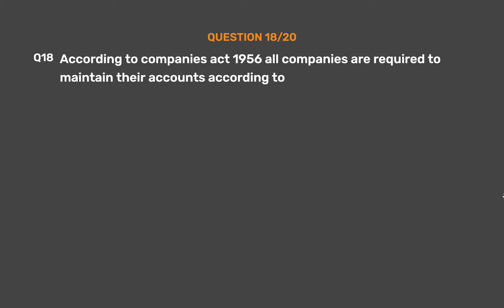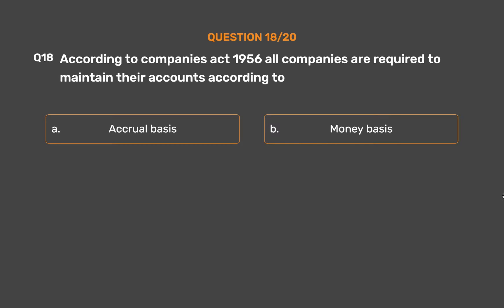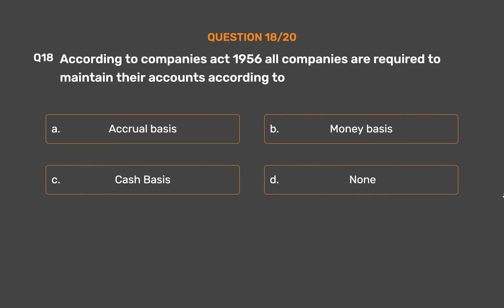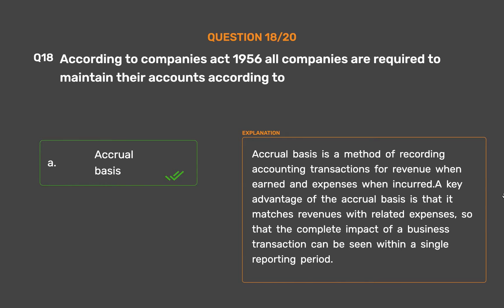Question No. 18: According to the Companies Act 1956, all companies are required to maintain their accounts according to which basis? Option A: Accrual basis. Option B: Money Basis. Option C: Cash Basis. Option D: None. The correct answer is Option A: Accrual basis. Accrual basis is a method of recording accounting transactions for revenue when earned and expenses when incurred. A key advantage is that it matches revenues with related expenses, so the complete impact of a business transaction can be seen within a single reporting period.